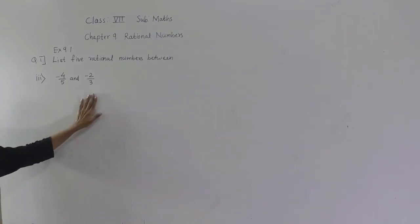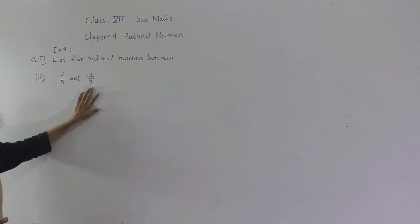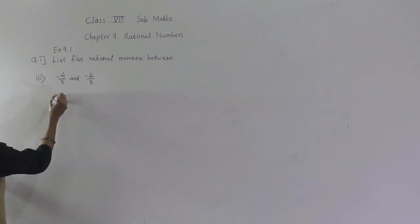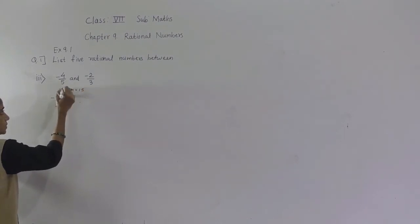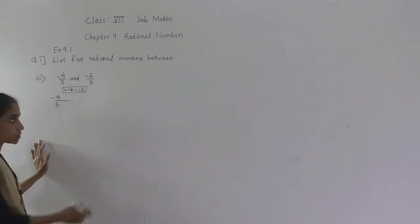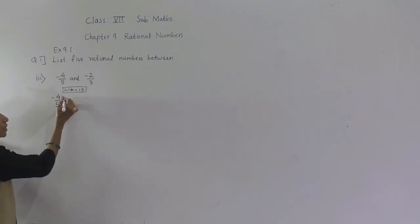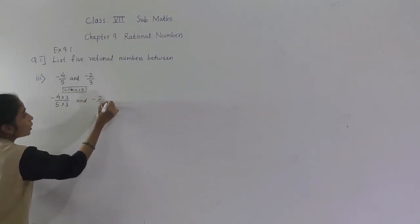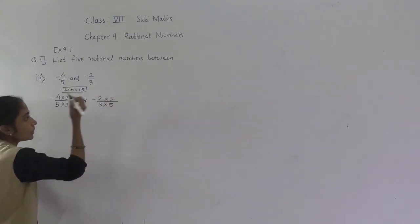Question 3: Find rational numbers between two given rational numbers. The denominators are not the same, so we make them equal. The LCM of 5 and 3 is 15. For minus 4 upon 5, multiply by 3 to get denominator 15. For minus 2 upon 3, multiply by 5 to get denominator 15.